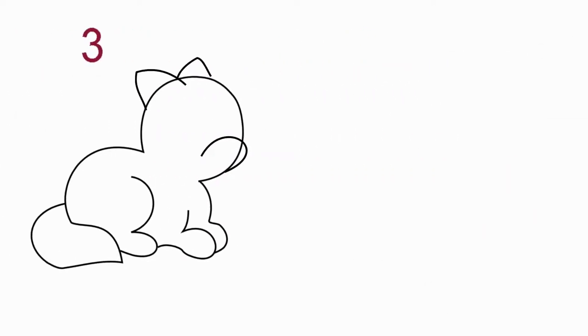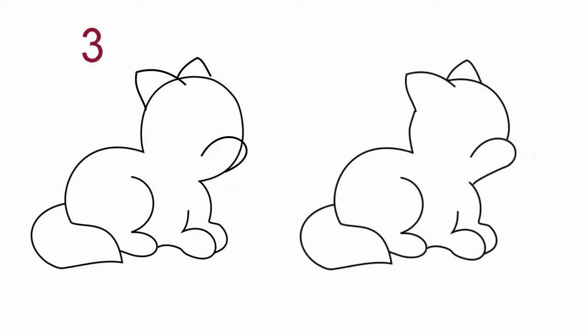Draw the muzzle of a cat. Carefully erase the extra lines. Draw a cat's eye. We can see only one eye, because our cat turns sideways.